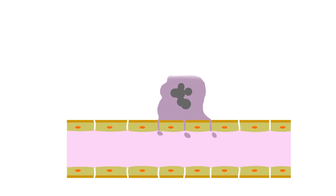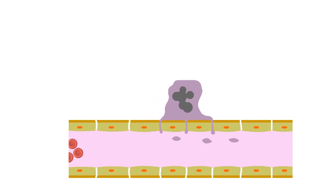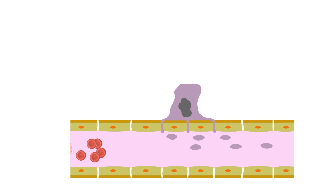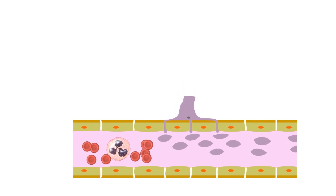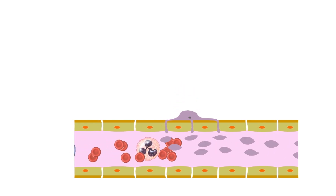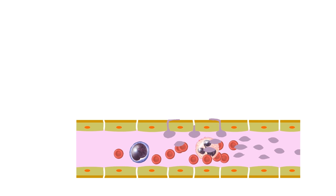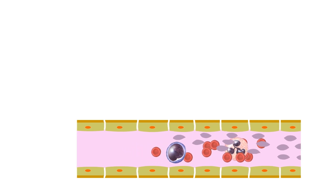So they send their cellular projections through the endothelial gaps, and as these projections come in contact with blood, they become fragmented because of the force of the blood flow.